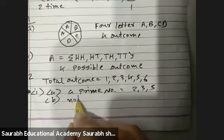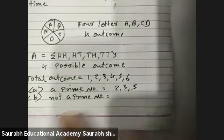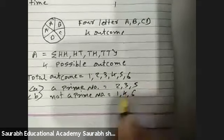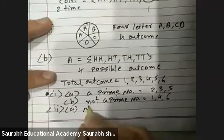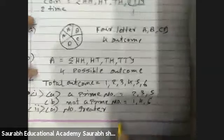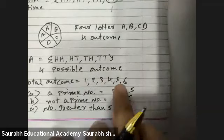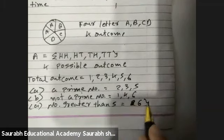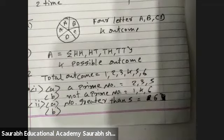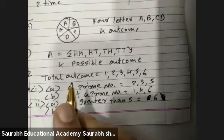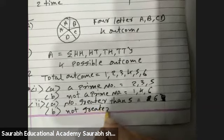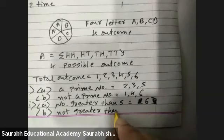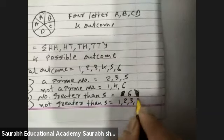Second: not a prime number — that is 1, 4, and 6. Third: number greater than 5 — it will be only 6. And a number not greater than 5 — that is 1, 2, 3, 4, and 5.